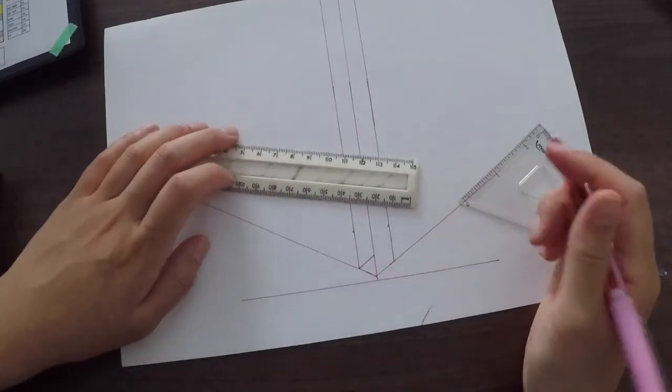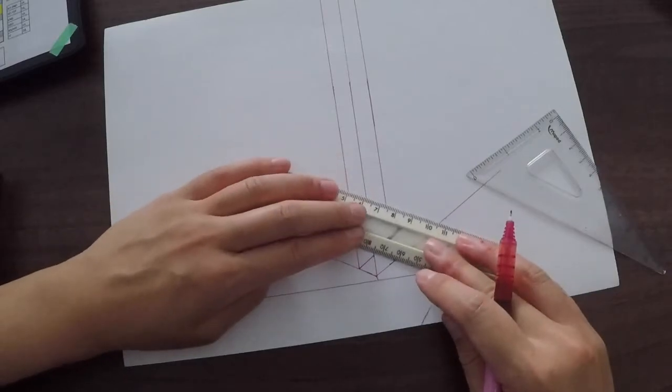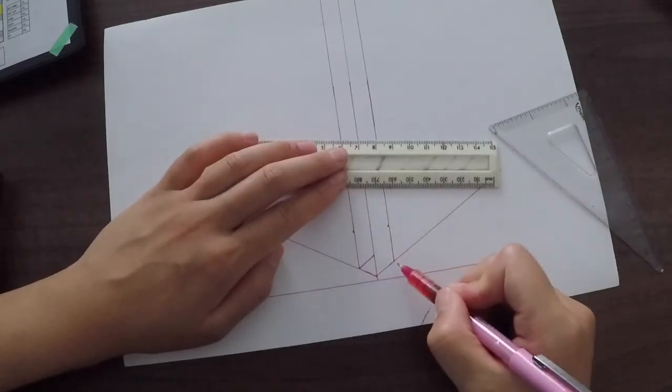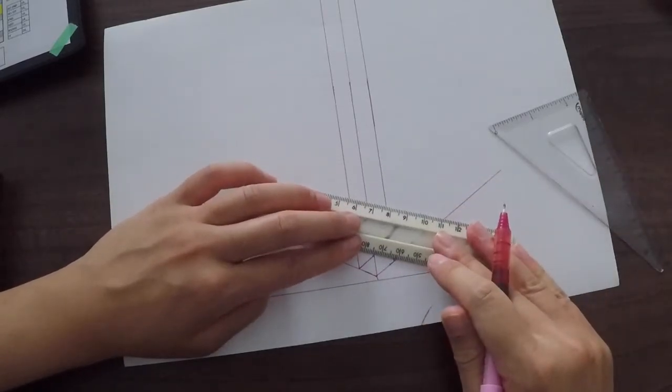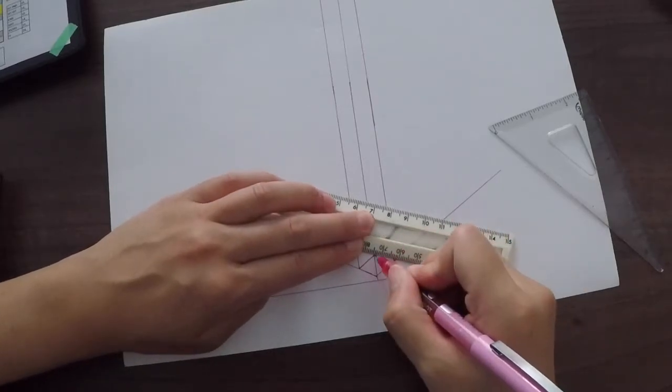Now that I've done that, I'm now going to do the same and join these lines together. And that basically creates the base of the isometric cube.